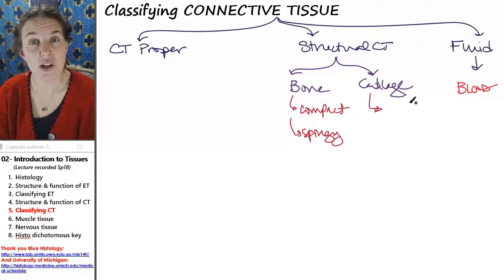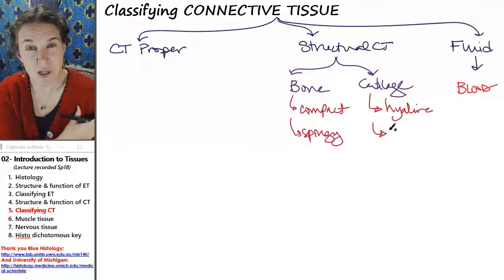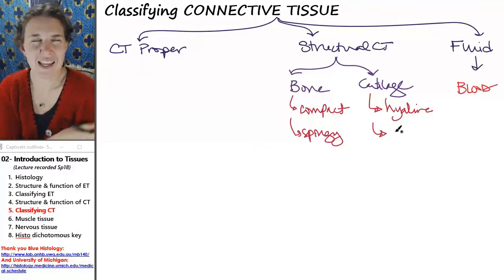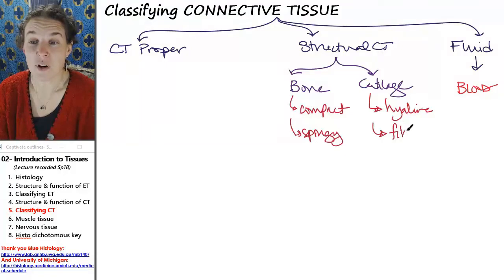There's three kinds of cartilage. There's a cartilage called hyaline cartilage. Hyaline cartilage is found on the ends of your long bones. So your epiphyseal plate is made of hyaline cartilage. Those are the growth plates in your long bones.